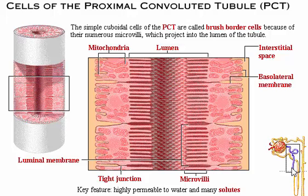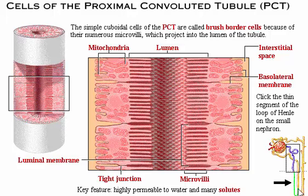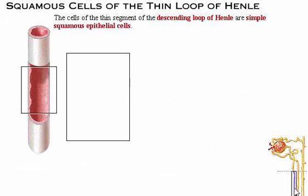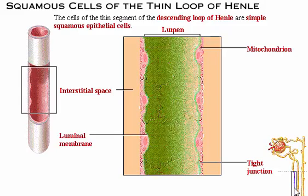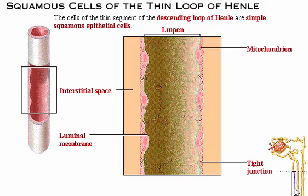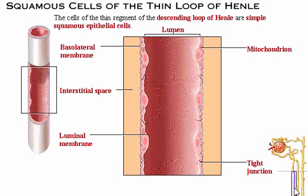The cells of the thin segment of the descending loop of Henle are simple squamous epithelial cells. These cells lack brush borders, which reduces their surface area for reabsorption. Although these cells continue to be permeable to water, they possess relatively few integral proteins that function as active transport molecules for reabsorbing solutes from the filtrate.